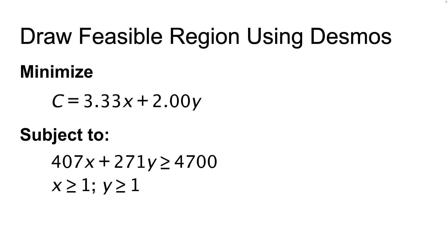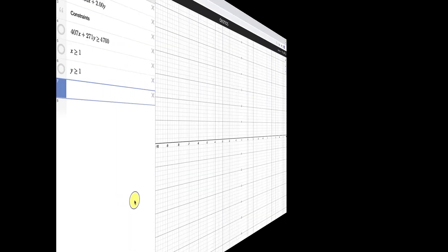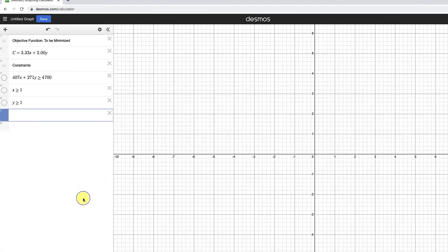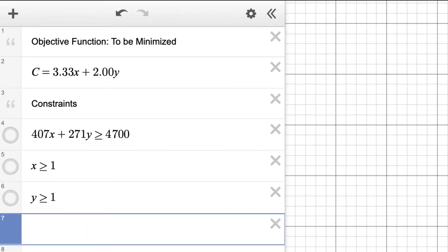Let's draw the feasible region for this linear programming problem. We want to minimize the function c equals 3.33x plus 2.00y, subject to the constraints: 407x plus 271y is greater than or equal to 4700; x is greater than or equal to 1; and y is greater than or equal to 1. Let's go back to Desmos and enter our three constraints on the left side. I've already entered the objective function and constraints — enter one constraint per cell.